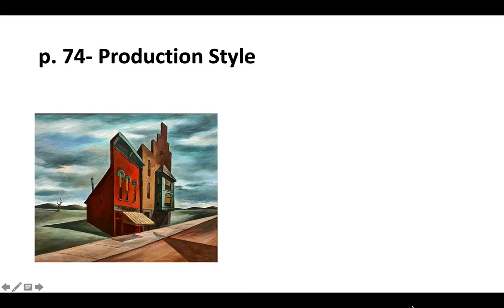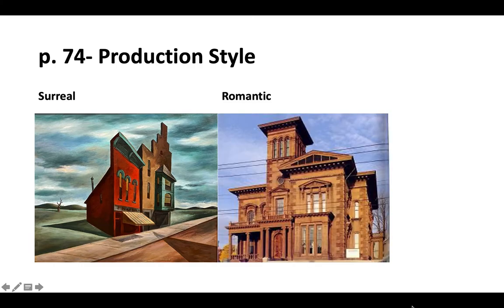This first example you may have guessed is surrealism, or the dreamlike state — hopefully you learned a little about this in intro to theater. Next is an example of romance — traditional romantic production style. This is definitely the one I've embraced for Much Ado About Nothing: charm, whimsy, detail, and an overall sense of beauty.